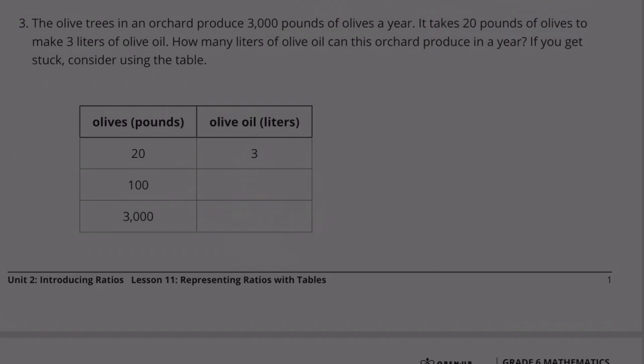Number 3. The olive trees in an orchard produce 3,000 pounds of olives a year. It takes 20 pounds of olives to make 3 liters of olive oil. How many liters of olive oil can this orchard produce in a year?